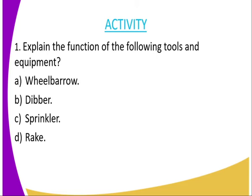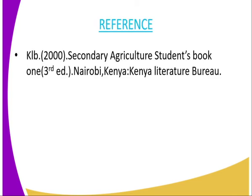We have come to the end of today's lesson and I am going to give you an assignment. The first question is: explain the function of the following garden tools and equipment — number one, wheelbarrow; number two, diba; number three, sprinkler; and finally, give the function of the rake. For reference, use the Secondary Agriculture Student Book One, published by Kenya Literature Bureau.